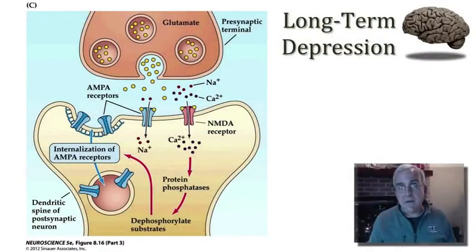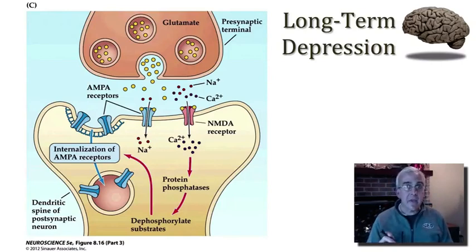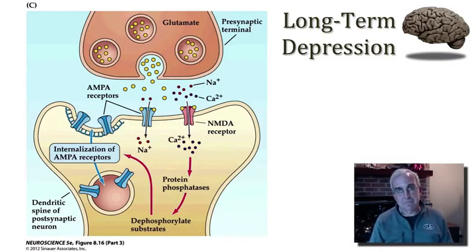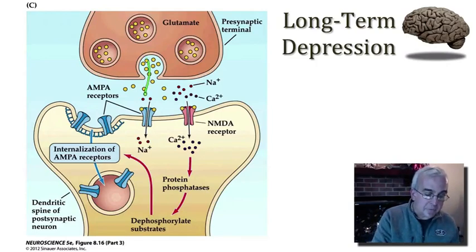Let's consider the molecular mechanisms of how long-term depression is induced and how it's sustained over time. Long-term depression, like long-term potentiation, requires the activity of both the pre-synaptic element and the post-synaptic process. There is a requirement for activity in order for the synapse to be depressed, but what's different is the nature of that activity. For long-term depression, there is low-frequency stimulation, which is sufficient to cause the release of glutamate.